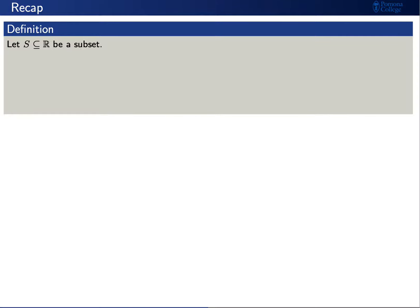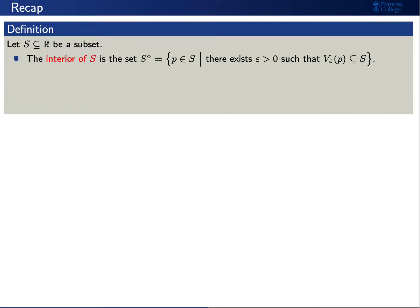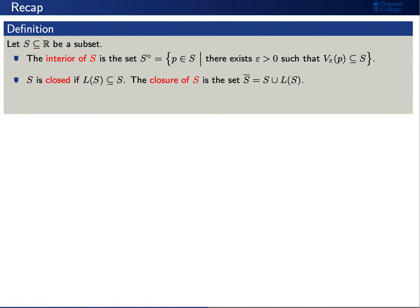We'll recall a few more definitions. Let S be a subset of the real numbers. The interior of S, namely S⁰, is the collection of points in S such that there exists a neighborhood of that point completely contained in S. We'll say that S is closed if each of its limit points is also in S. The closure of S, denoted S-bar, is the union of S along with its limit points. The complement of S, denoted Sᶜ, is the collection of those real numbers x such that x is not an element of S.